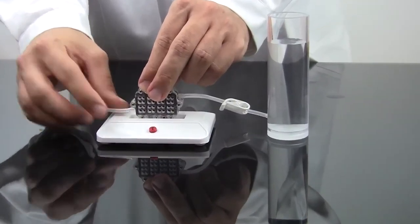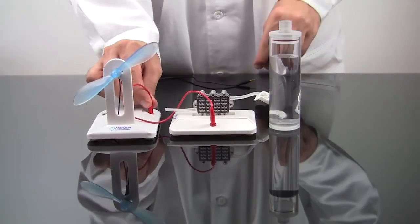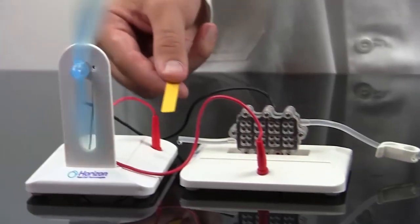You're ready to generate electricity by connecting the fuel cell to the fan motor. The included pH paper allows students to determine the acidity of the fuel cell's exhaust.